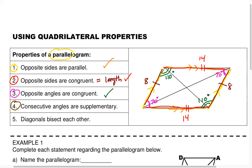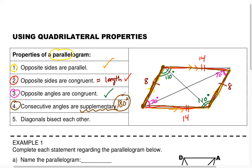Consecutive angles means they are in a straight path along a side. So if I start here and go here, I go through a 70-degree angle and a 110-degree angle — those are consecutive because they're in a line. Supplementary means they add up to 180 degrees. In my example, 70 plus 110 is 180. This holds for all consecutive angle pairs: going in a straight path along the outside perimeter of the parallelogram, you always get a sum of 180 degrees.